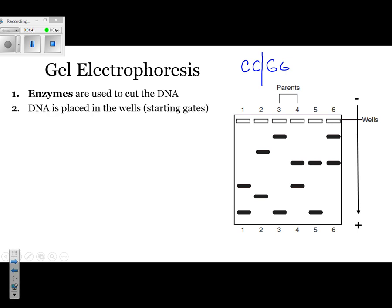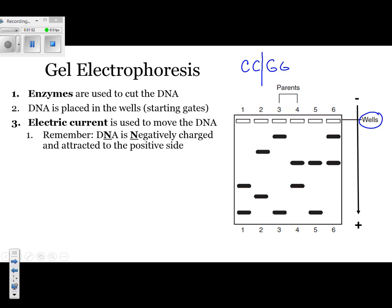Then we placed the DNA into the wells. The wells are represented by the rectangles — those are our starting gates, where you would add the DNA. After that, we applied an electric current, represented by the arrow on the right side. Notice there's a positive and a negative with the electrical charge. DNA is negative, so DNA is attracted to the positive side.